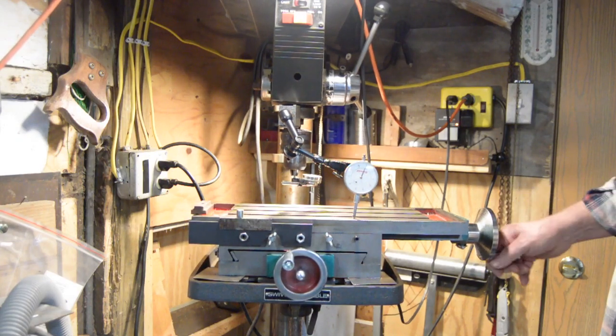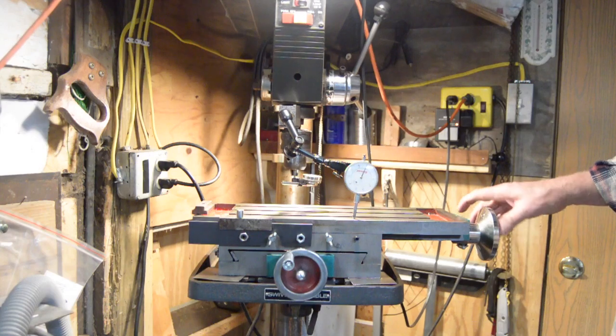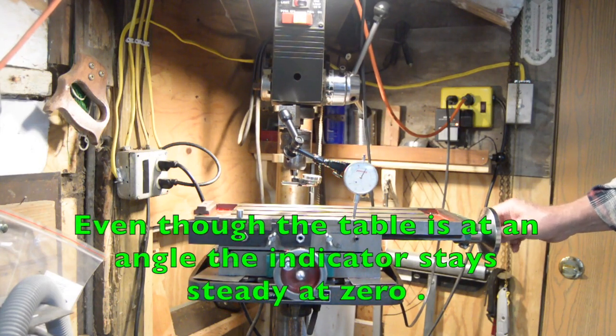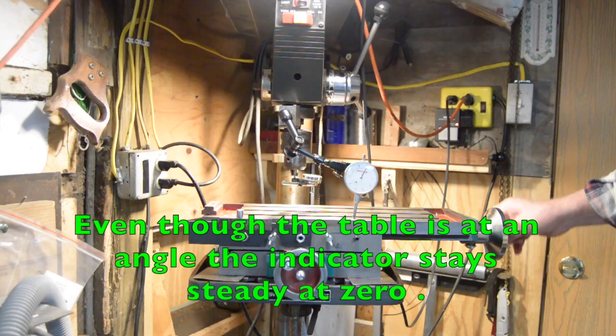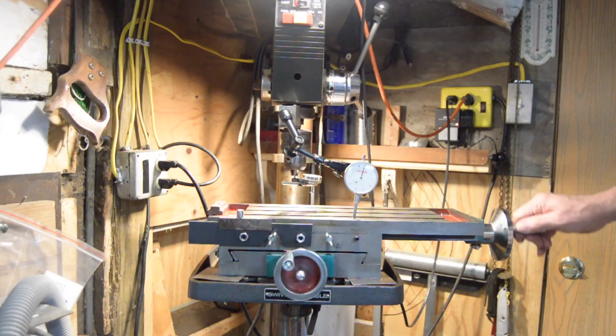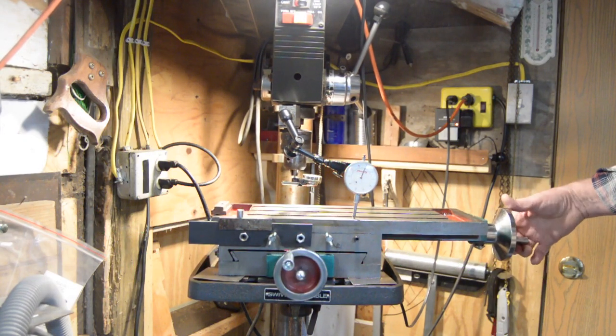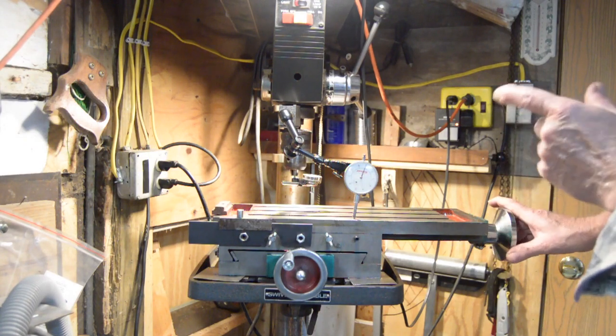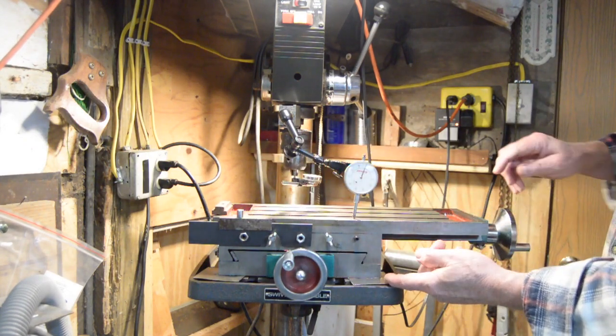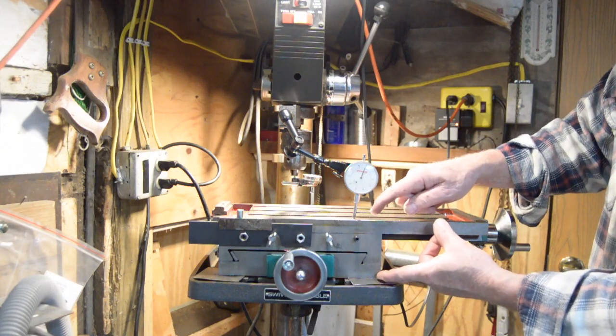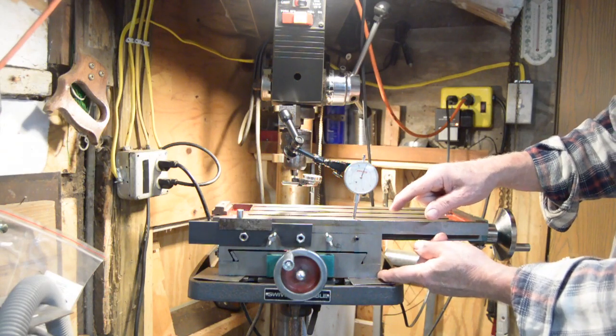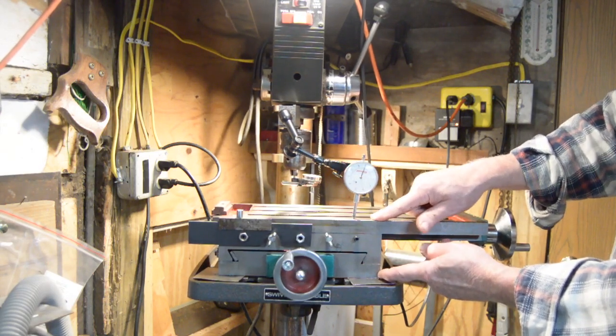So you see, it's at zero. It's staying pretty much at zero. If I let go of it. As I say, a lot of that's this. The gibs aren't, they're tight, but they're not that tight. But it's moving straight across. Because all I'm really measuring is the parallelness between the bottom of this and the top of this. The bottom of the XY table to the top of the XY table.